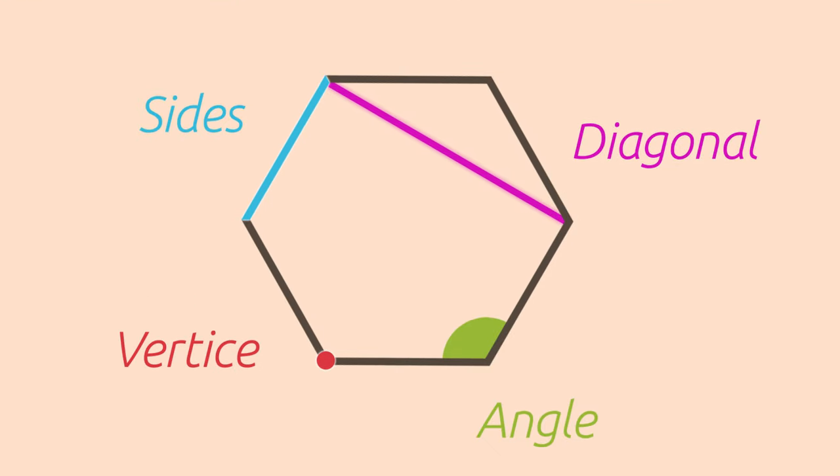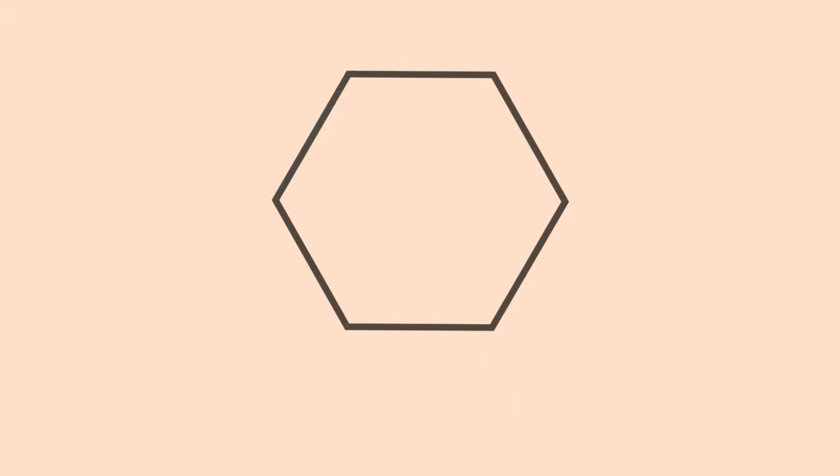Polygons are formed in several parts. The sides are each of the lines or segments that form the polygon. The vertices are the points where all sides meet. The angles are the space determined between two adjacent sides. The diagonals are the segments that connect two non-adjacent vertices.